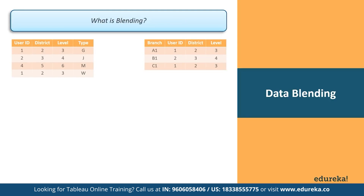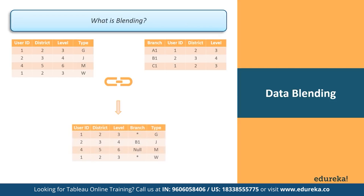Now take for instance you have the same tables again. If the linking fields are User ID on each table, blending your data takes all the data from the left table and supplements the left table with the data from the right table.